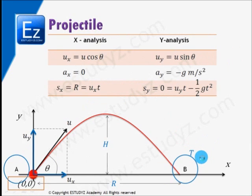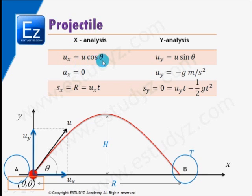We'll divide this motion into two different motions: the x-motion and the y-motion. We'll find out various parameters of each. Ux is the initial velocity along the x-direction, which is u cos theta, and uy is the initial velocity along the y-direction, which is u sin theta.